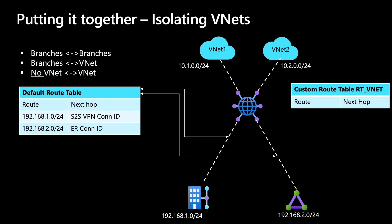Let's go ahead and create a custom route table — we did that in the previous step. There is an empty custom route table called RTVNet here. We'll associate these VNets to the custom route table, which means the VNets are going to know about the routes in the custom route table called RTVNet.